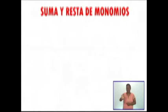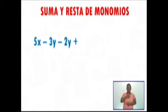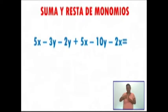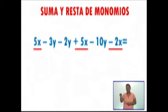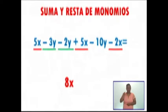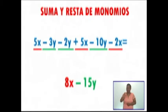Vamos a ver otro ejemplo. Aquí tengo 5x menos 3y menos 2y más 5x menos 10y menos 2x. Voy a sumar los términos semejantes en orden alfabético, empezando con la x. 5x más 5x son 10x, menos 2x: 8x. Ahora con las y: menos 3y menos 2y son menos 5y, menos 10y son menos 15y. Por lo tanto, nuestro resultado final es 8x menos 15y.